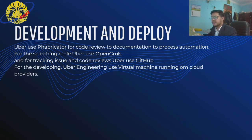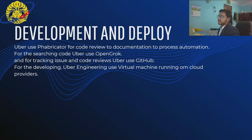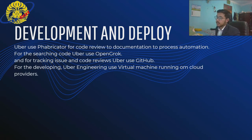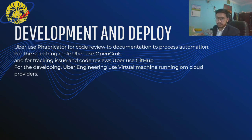For development and deployment, Uber uses Fabricator for code review, documentation, and process automation. For searching code, Uber uses OpenGrok, and for tracking issues and code reviews, Uber uses GitHub. For development, Uber engineering uses virtual machines running on cloud providers.